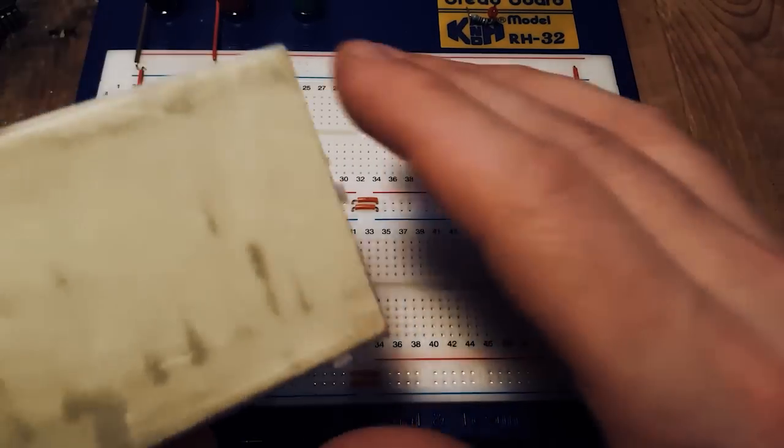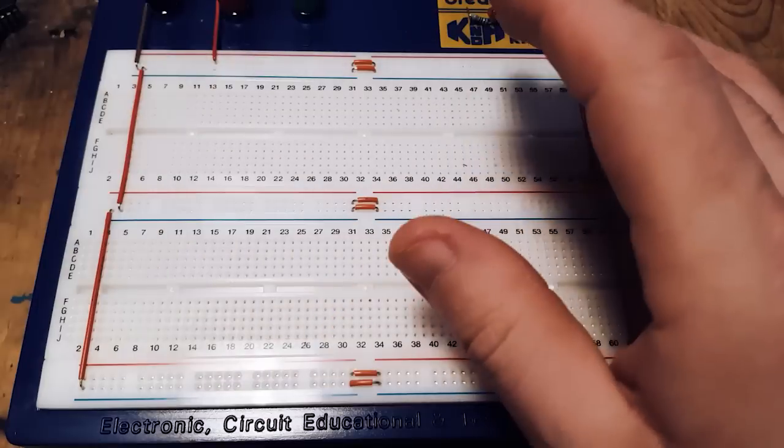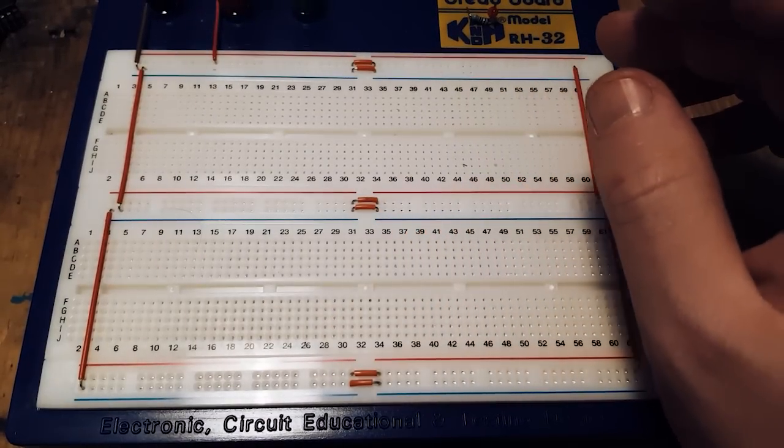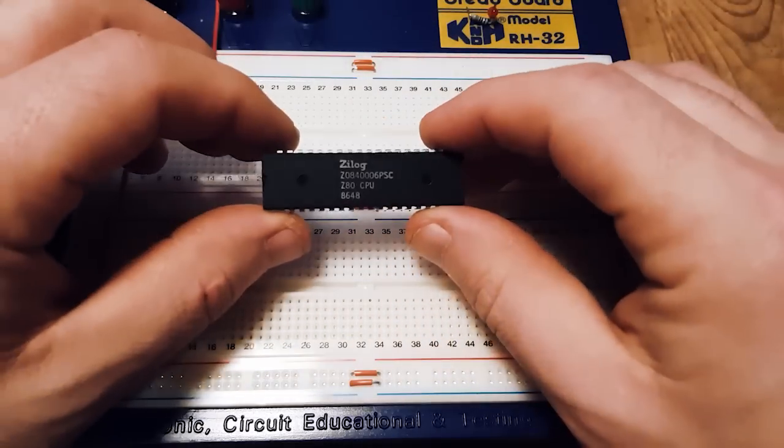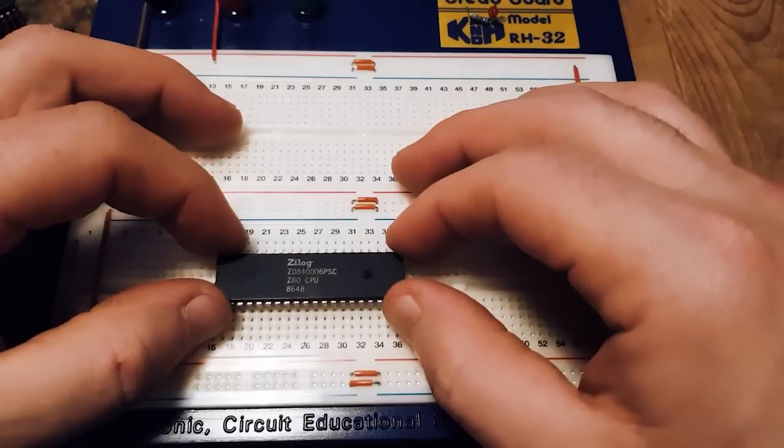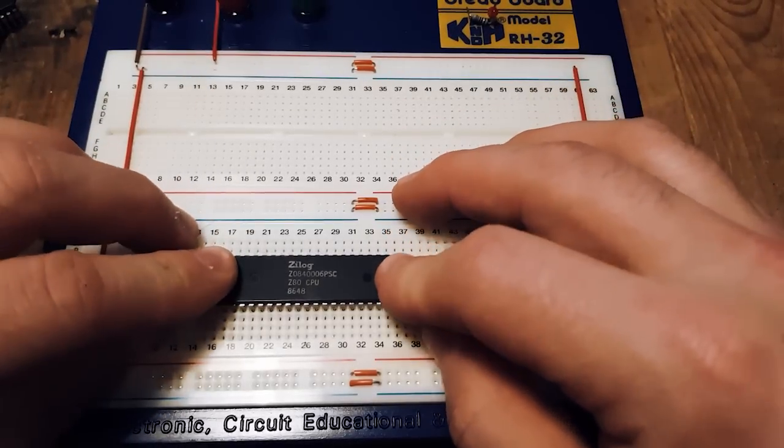Otherwise you can actually treat them as four separate breadboards. You get smaller ones that size as well. I already have a small circuit on this which I won't show you yet. But essentially, let's start. So what we need is a Z80. So we place it somewhere handy, convenient, somewhere in front of us here.